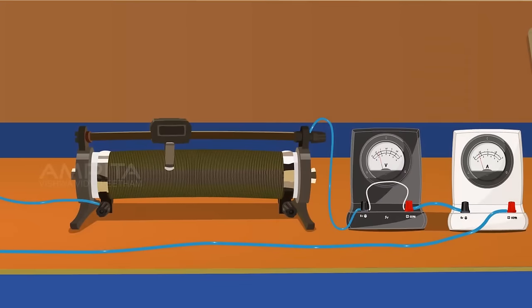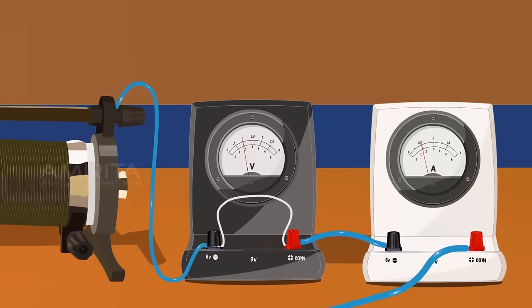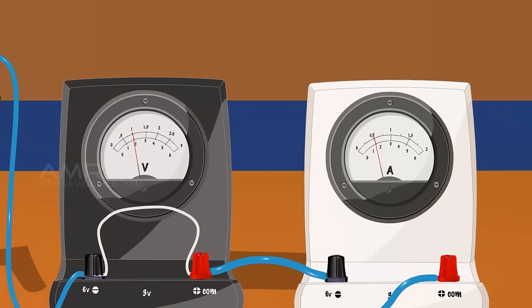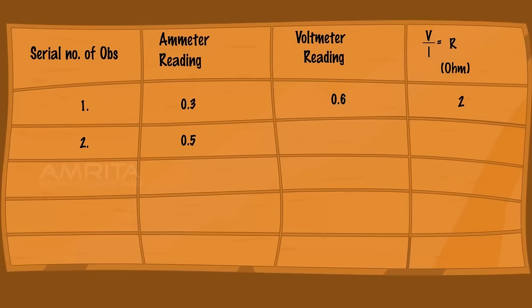Shift the rheostat contact slowly. Record the reading of the voltmeter and ammeter and calculate the value of r in each case.